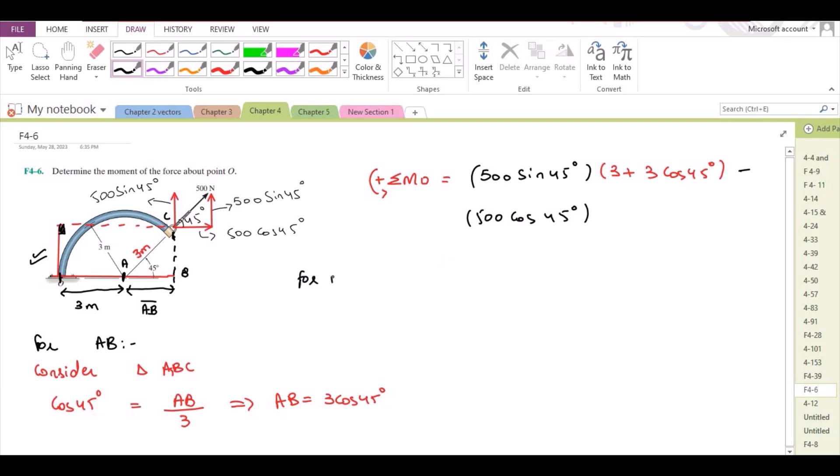For BC we have to consider the same ABC triangle, and sin 45 degrees equals BC over the hypotenuse that is 3 meters. So BC becomes 3sin45 degrees.